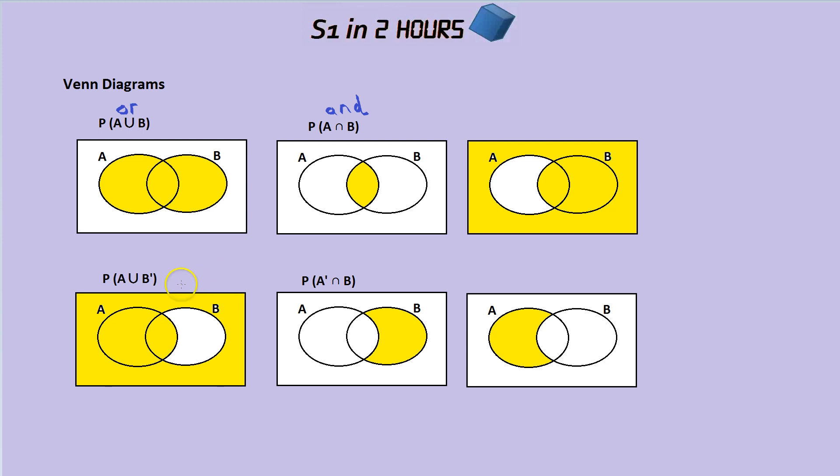The final thing to learn, by the way, is that when there's a dash, that means not. So for example, B dash means not B.